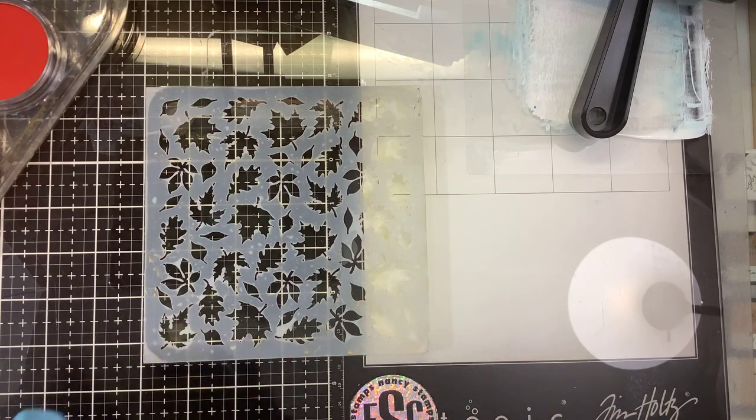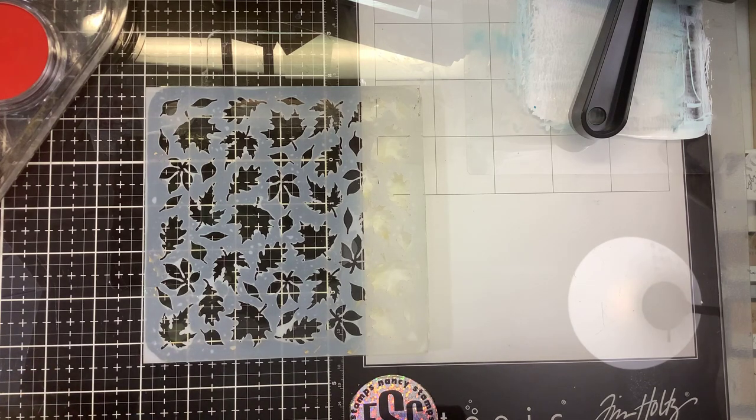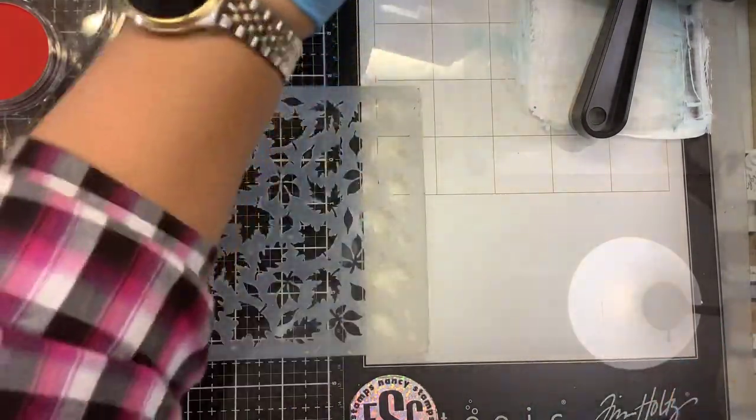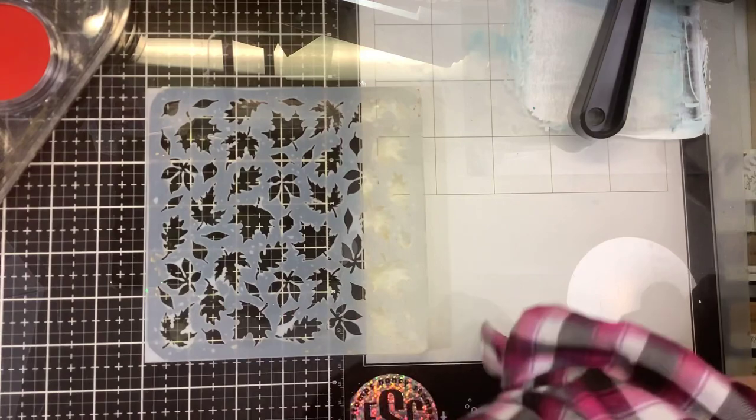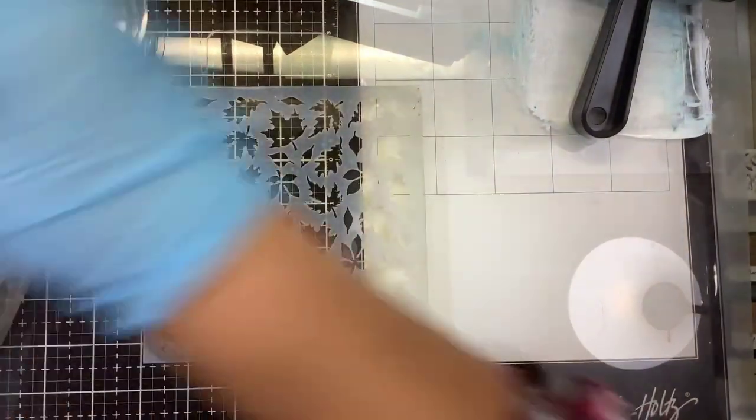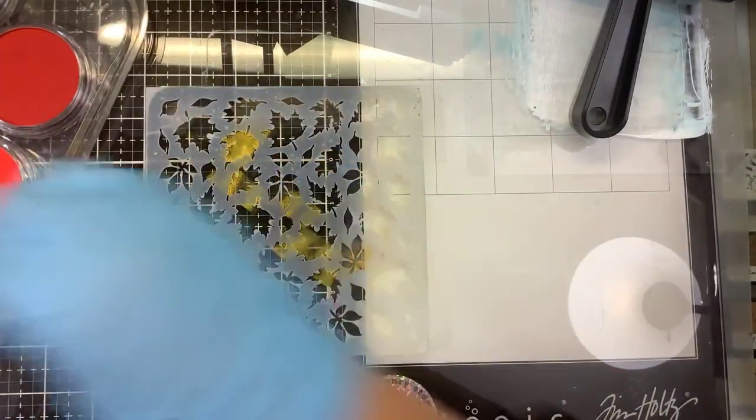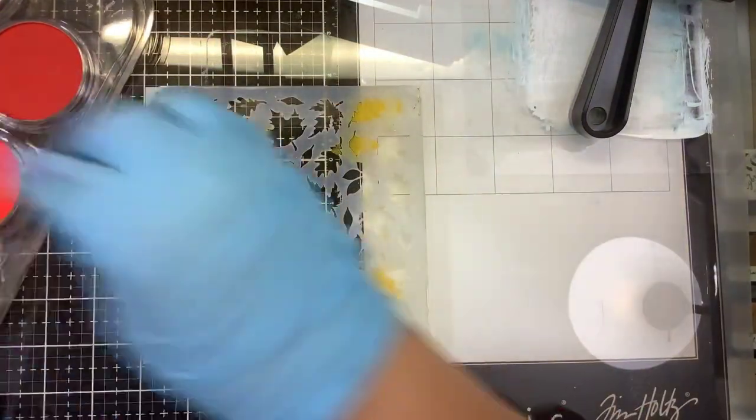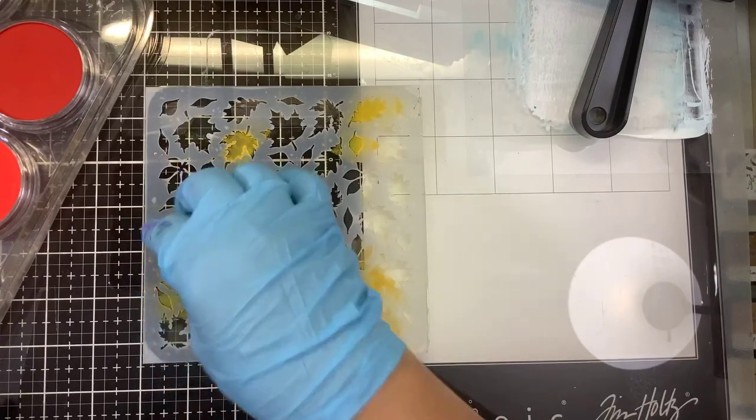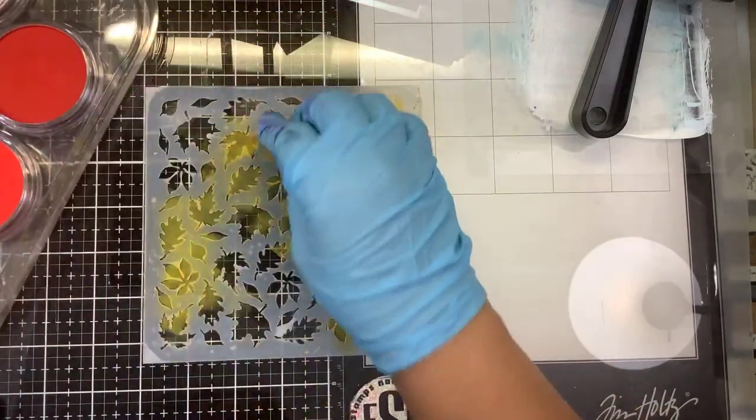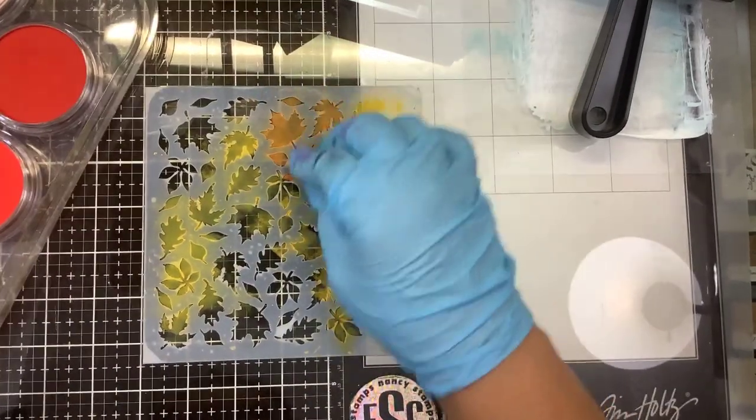This one might be a little too big, let's find one a little smaller. I only have gloves on because I was playing with alcohol inks. You certainly don't need gloves, but they're already on. So I'm going to take this soft tool and just go into the various colors. This is all I'm going to do, no rhyme, no reason, just sponge some of that color.